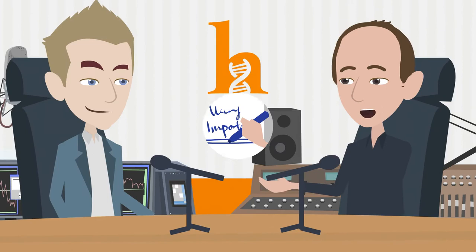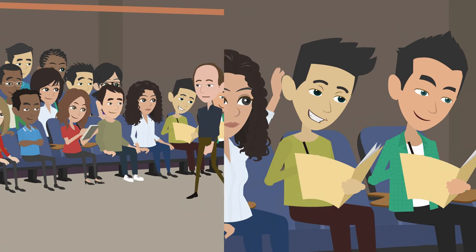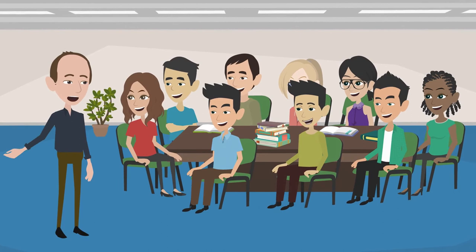One of the things I argue in the book is that attention is reciprocal — the more attention I pay to you, the more attention you are going to pay to me. In a classroom, the teacher can do that by moving around the room, calling out individual students to engage in conversation, inviting everyone into the room, doing things that are going to help build that sense of community.